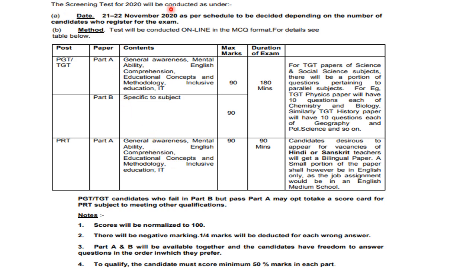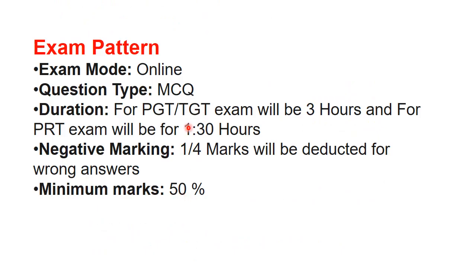Let's look at a brief overview. PGT and TGT had two parts — Part A and Part B, both online. Part A had 90 questions, Part B had 90 questions specific to subject. But for maths subject, there were 60 questions in Part B. PRT was only Part A, covering general awareness, mental ability, English, educational concepts, inclusive education, and IT. Negative marking was 1/4th and you need to qualify for 50 marks — 50% to 53% is always the cut-off for qualification.